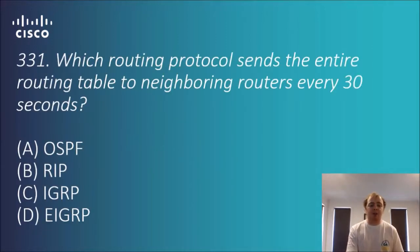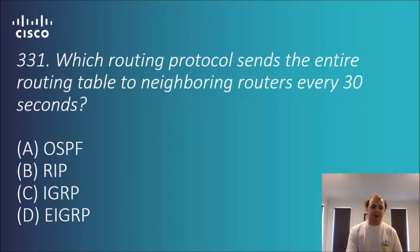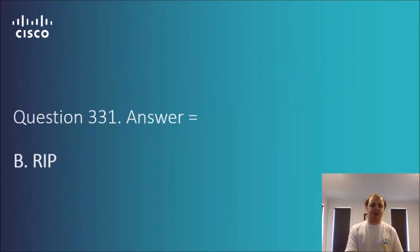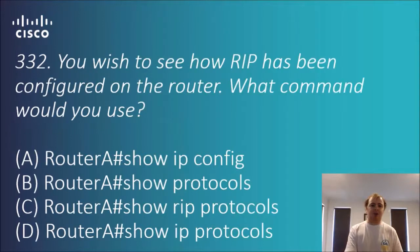Question 3.31: which routing protocol sends the entire routing table to neighboring routers every 30 seconds? The options are OSPF, RIP, IGRP, and EIGRP. As discussed before, the answer is B — RIP. That's the protocol that sends updates every 30 seconds.